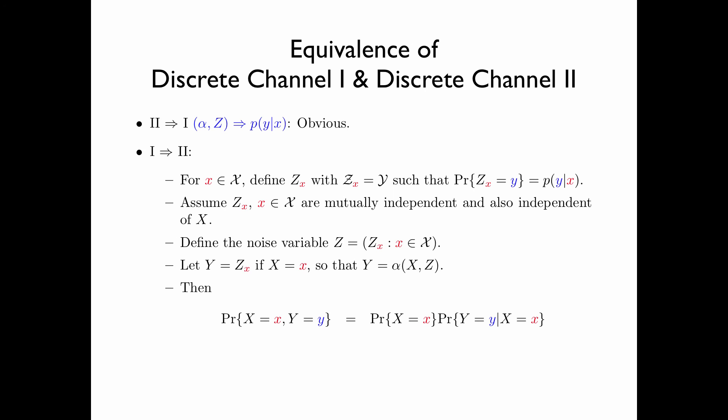Now we check that the discrete channel 2, so constructed, is in fact equivalent to the given discrete channel 1. Consider the probability that x equals x and y equals y. This equals the probability that x equals x times the probability that y equals y given x equals x. Because z_x is independent of the input variable x, given that the input variable is x, the output variable y equals z_x. So this equals P(x) times the probability that z_x equals y given x equals x. Since z_x is independent of x, we can drop the conditioning, and finally, the probability that z_x equals y, by construction, equals P(y|x). So the discrete channel 2 constructed is indeed the discrete channel 1 specified by transition matrix P(y|x).